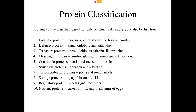What we want to talk about today is less how proteins are put together and more what they do once assembled — once folded into one of these shapes, what's their function? We can classify proteins by what they do. There are at least 10 categories. First: catalytic proteins, or enzymes — they do chemistry. Not all proteins are enzymes; some are, some aren't. Second: defense proteins — our immunoglobulins, also called antibodies.